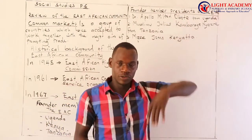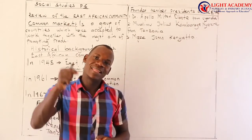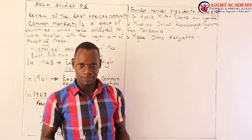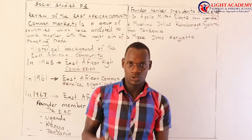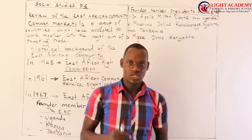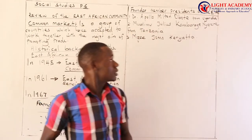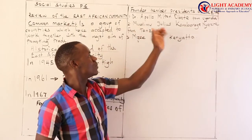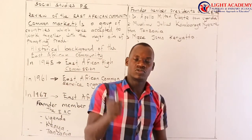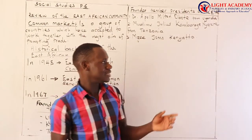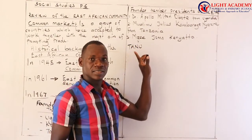These were the same people who led their countries to independence. For Uganda, the one who led Uganda to independence was Dr. Apollo Milton Obote, with the political party UPC — Uganda People's Congress. The one who led Tanzania to independence was Mwalimu Julius Kambarage Nyerere, and his political party was TANU — Tanganyika African National Union.